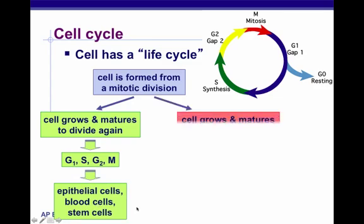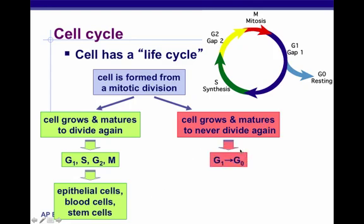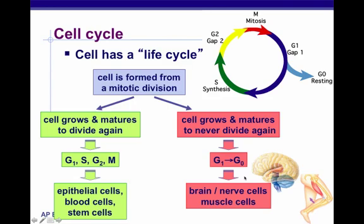Some cells in our body grow and mature and then never divide again. In this case, they go from G1 into G0, which is just resting. This applies to brain and nerve cells and muscle cells. Some cells, in particular liver cells, have the ability to come out of G0 if triggered to develop new cells — this is how the liver has the ability to regenerate itself.